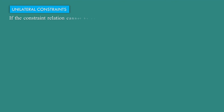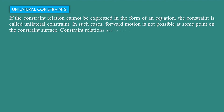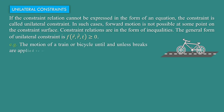Unilateral constraints: if the constraint relation cannot be expressed in the form of an equation, the constraint is called a unilateral constraint. In such cases, forward motion is not possible at some point on the constraint surface. Constraint relations are in the form of inequalities. The general form is f(r⃗, r⃗̇, t) ≥ 0. For example, the motion of a train or bicycle until and unless brakes are applied to it.